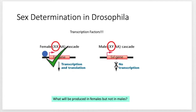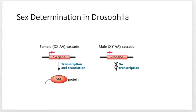The little blue dot represents a transcription factor. In females, we get enough transcription factors to get transcription of the SXL gene — that's what the green check mark represents. Whereas in males, we don't get enough transcription factors, so the SXL gene is not transcribed. Following the central dogma, transcription leads to mRNA and then translation produces a protein — so in females, the SXL protein is being produced.